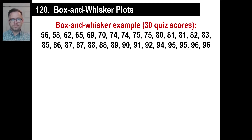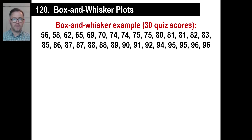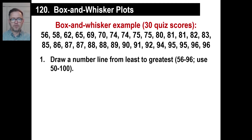This will cover 30 quiz scores. We're basically just drawing a graph that has a certain special look to it — it has a box and it has a whisker. Those are the 30 quiz scores. These are the steps, so write these down. Number one, you're going to draw a number line from the least to the greatest. The least is 56, the greatest is 96, but use like 50 to 100 — make it nice, even tens.